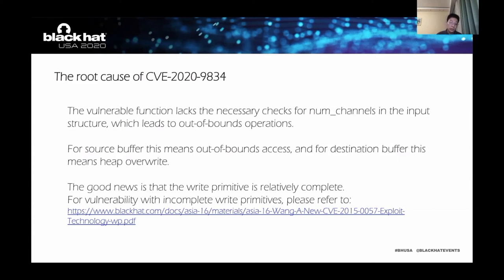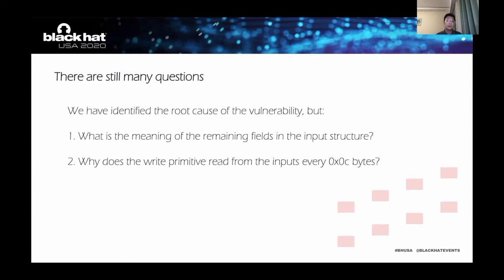Let me summarize the root cause of CVE-2020-9834. The vulnerable function lacks the necessary checks for number of channels in the input structure, which leads to out-of-bounds operations. The out-of-bounds operation has two places: source and destination buffer. For the source buffer, this means out-of-bounds access. And for the destination buffer, this means heap overwrite. The quality of this vulnerability is pretty good because the write primitive is relatively complete. For a vulnerability with an incomplete write primitive, please refer to my previous write-up. We can write the analysis report and even exploit code, but there are still some unanswered questions — such as why the write primitive reads from the input every 0xC bytes, and what is the meaning of the remaining fields in the input structure.